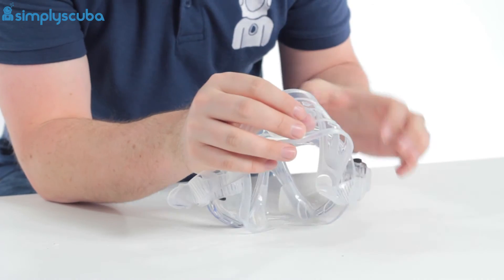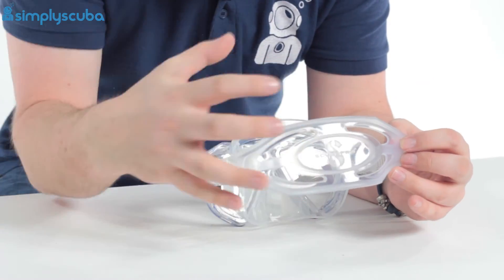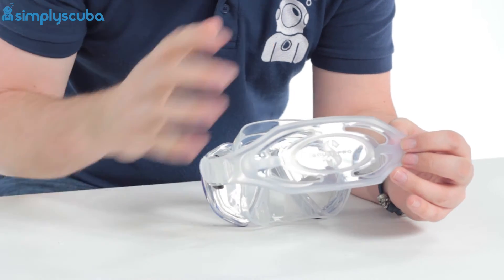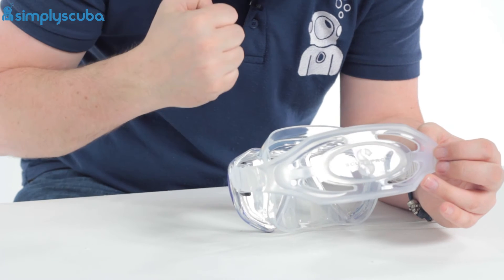The mask strap is a 3D mask strap so it wraps around the back of your head and that's going to hold on really effectively even if you're wearing a hood as well. It's going to grab hold of that and stop it from moving around.